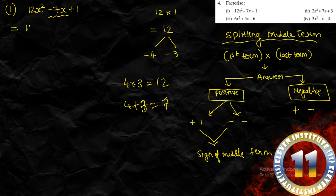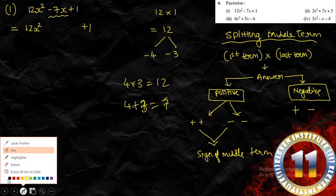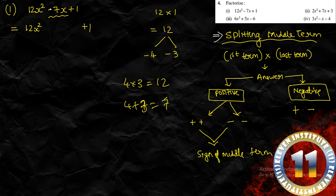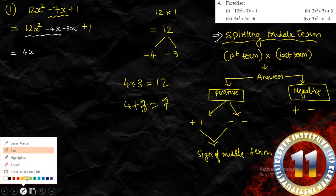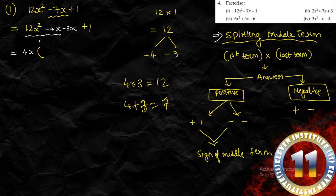Now we can factorize. The 12x² will be kept as it is, and the plus 1 will also be kept as it is. We split the middle term: instead of minus 7x we write minus 4x minus 3x. Now we have 4 terms. We group the first two and the last two and take common factors from each group.